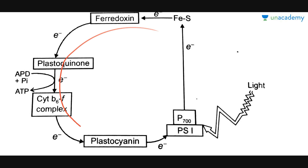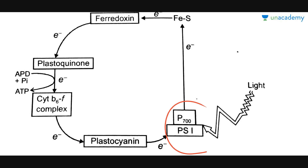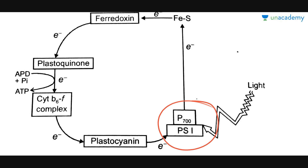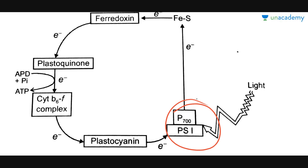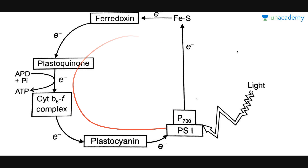At the last step, the electrons are transferred to plastocyanin. Through this series of electron acceptors, plastocyanin transfers the electrons back to the P700 reaction center or Photosystem 1. This is because the reaction center is in an oxidized state, having already lost its electrons, so plastocyanin can easily transfer its electrons back to Photosystem 1. Since the electrons that started from Photosystem 1 come back to it after traveling through various electron acceptors, this process is known as cyclic photophosphorylation.